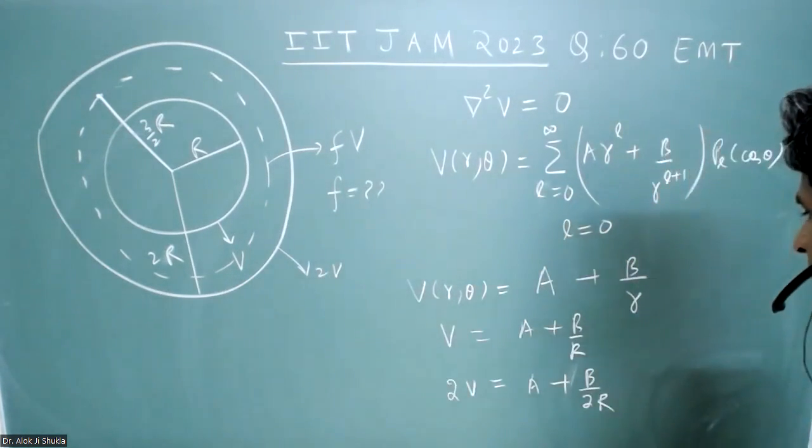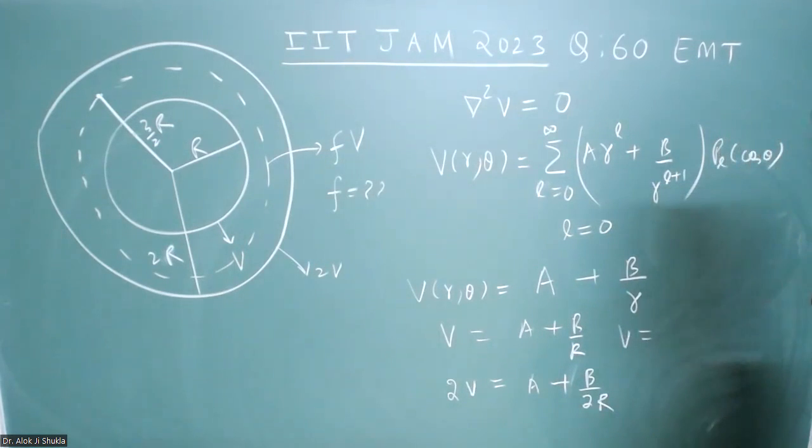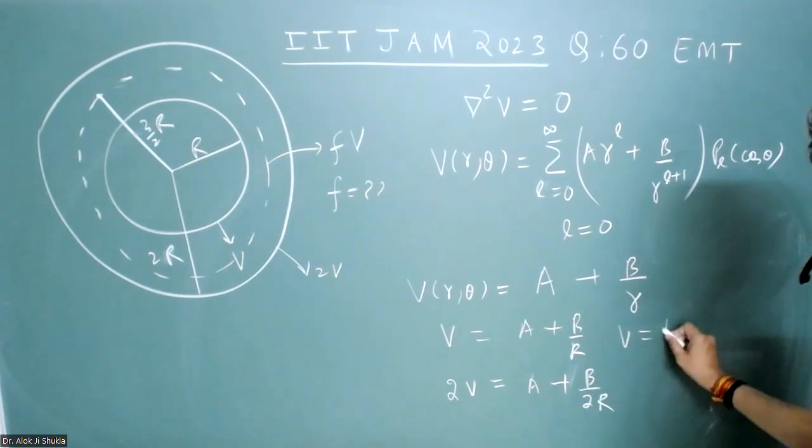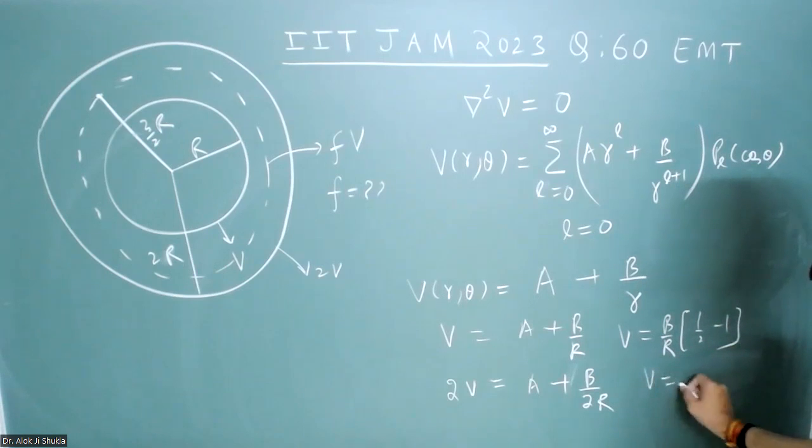Just subtract this. You will get v is equal to this minus this, so it will be b/r times (1/2 - 1), which is v equals minus b/2r. So you got the value of b from here.